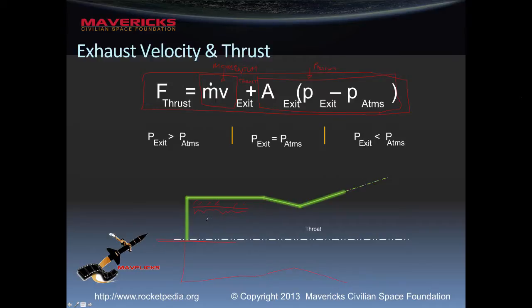We know from the ideal gas law that pressure and temperature in a closed volume basically go up in correlation to each other — if you increase the temperature, the pressure goes up. So as we're burning this propellant, the temperature and pressure in the combustion chamber are going up. The pressure here is higher than the pressure out at atmosphere. In a rocket motor we're typically burning at about 1,000 psi of pressure.